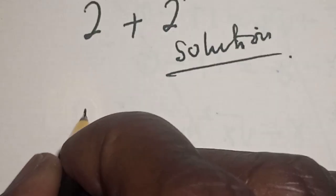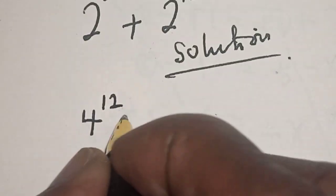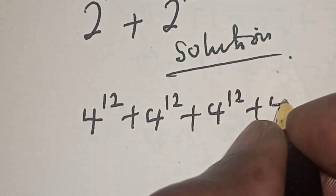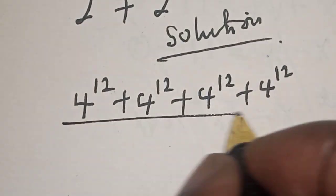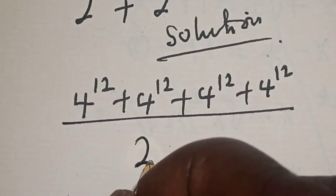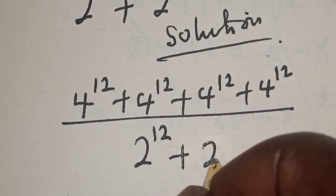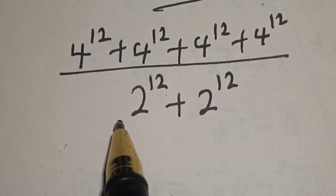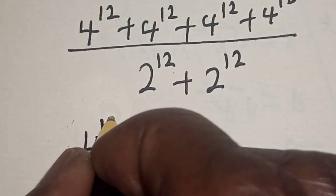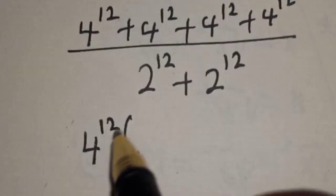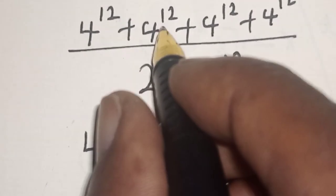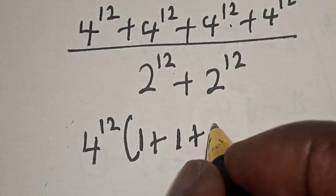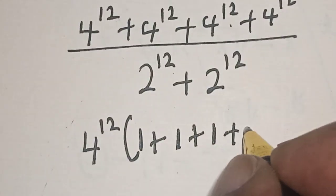We have 4 to the power 12 plus 4 to the power 12 plus 4 to the power 12 plus 4 to the power 12, all divided by 2 to the power 12 plus 2 to the power 12. For the numerator, 4 to the power 12 is common. Let's bring it out: 4 to the power 12 times 1 plus 1 plus 1 plus 1.